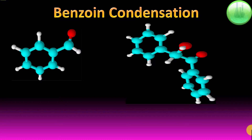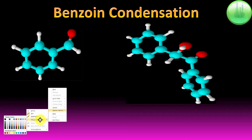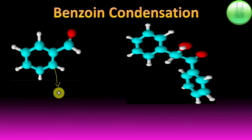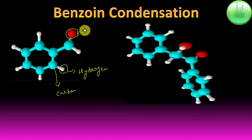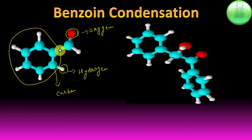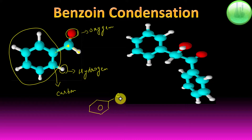Let's get started with benzoin condensation. First, let's understand the figures drawn here. The blue atom represents carbon, the white ones represent hydrogen atoms, and the red one represents oxygen. As you can see, this is a benzene ring — the double bonds are not shown. Attached to it is a carbon, which is attached to one hydrogen, and that carbon is also attached to oxygen via a double bond. So this is benzaldehyde.